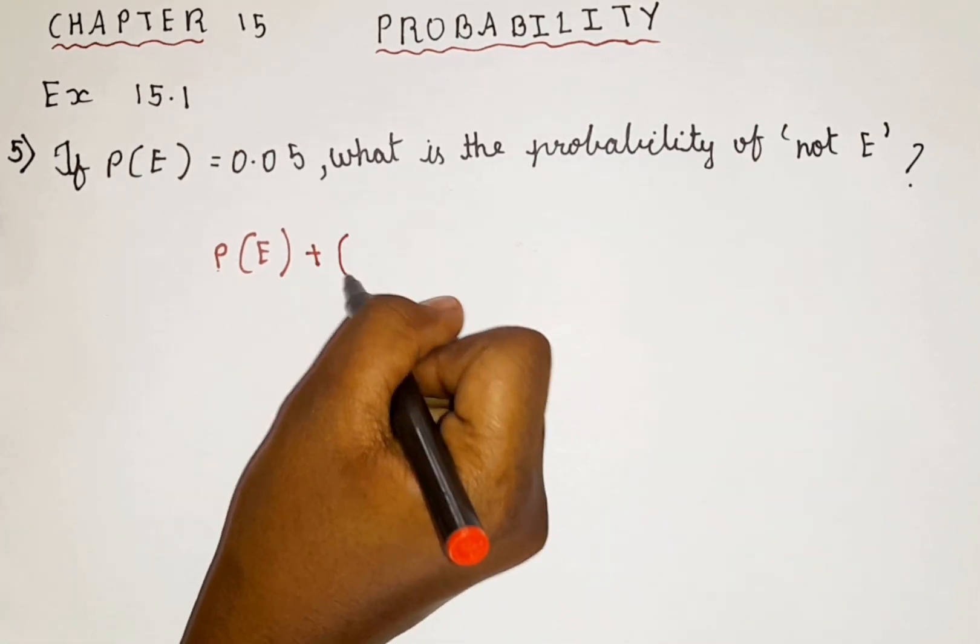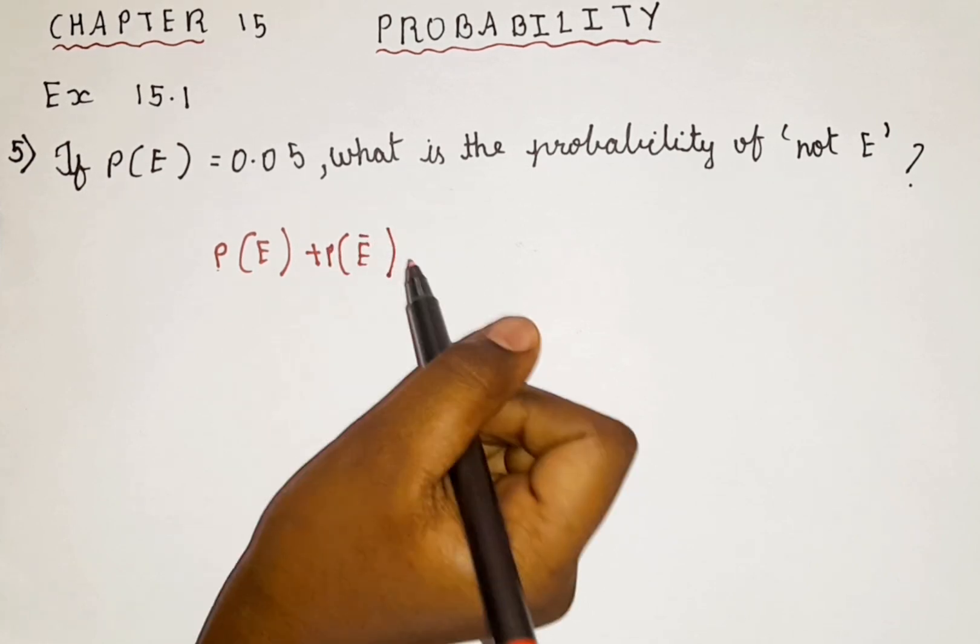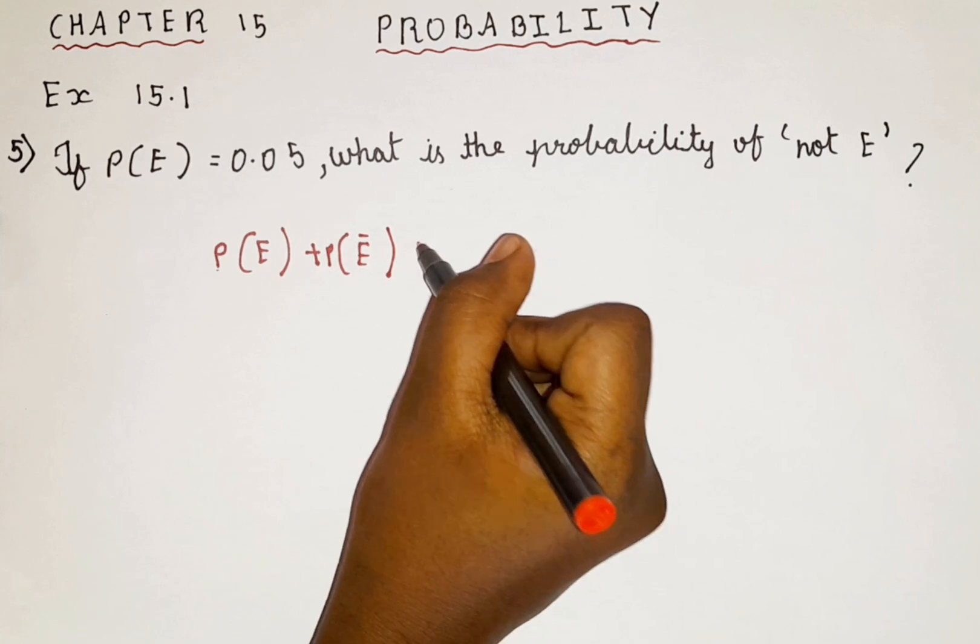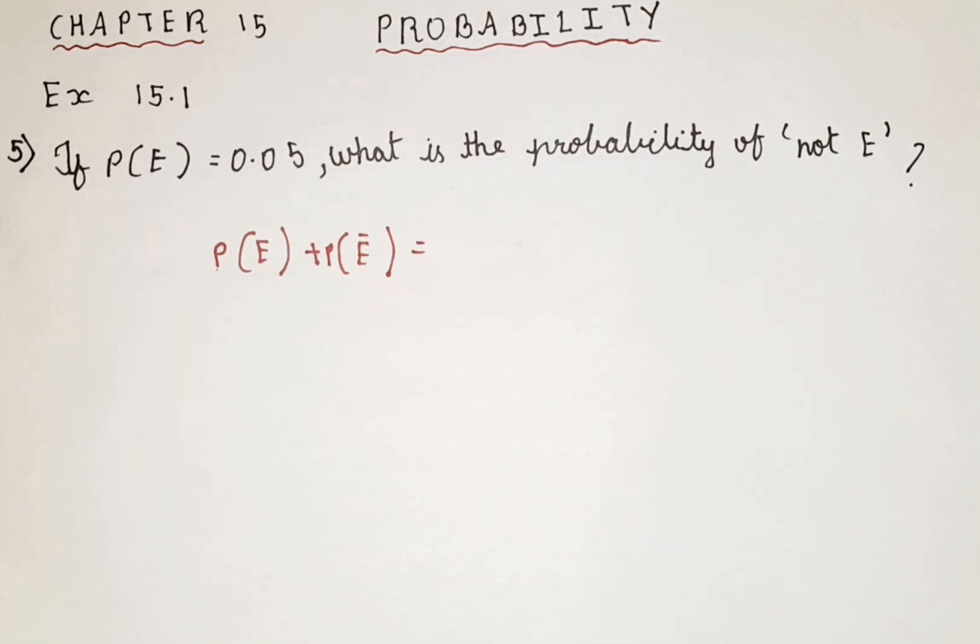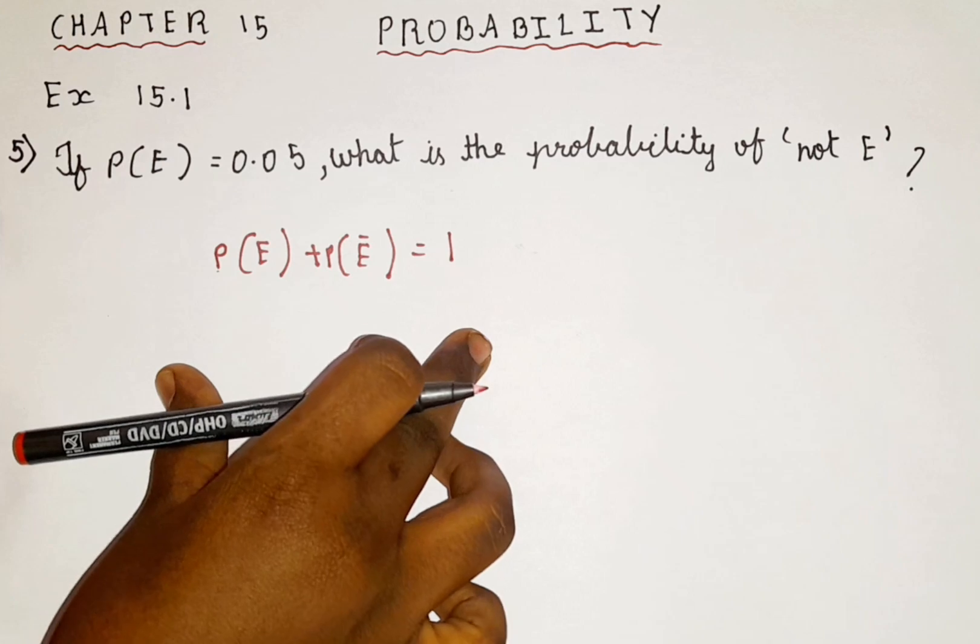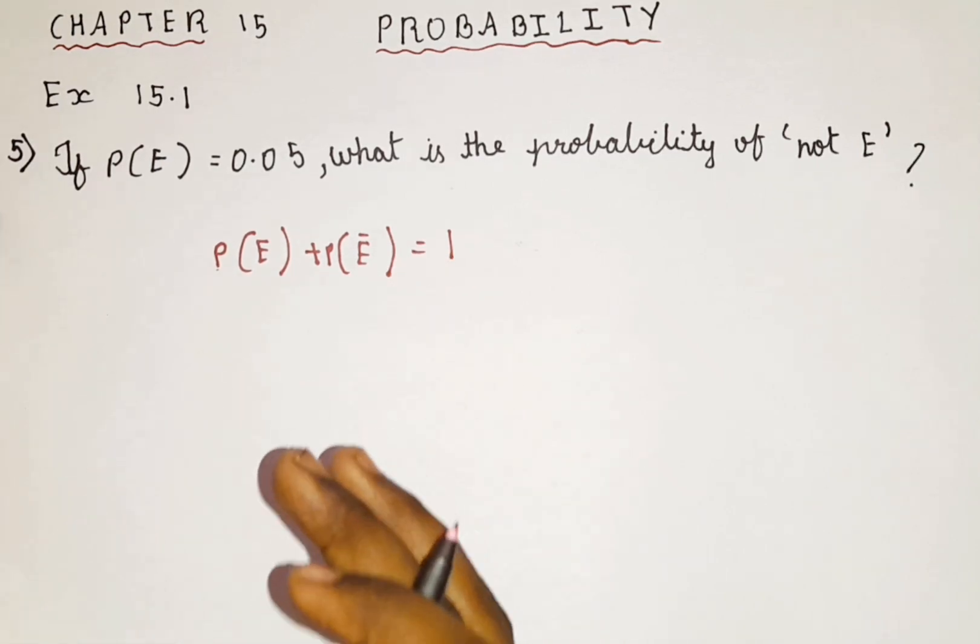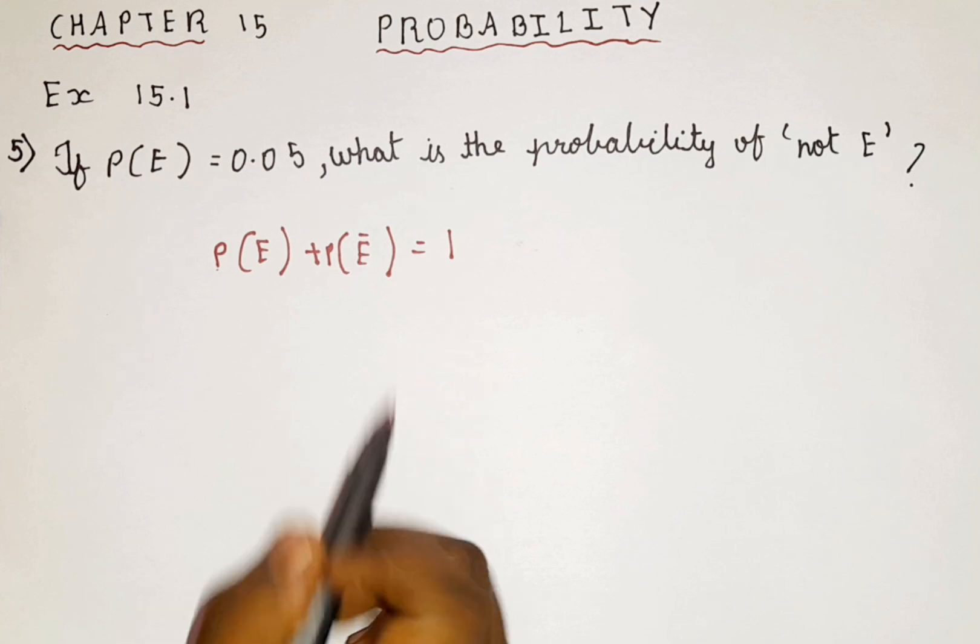So probability of an event plus probability of not an event is equal to 1. Remember this formula, probability of an event and probability of not happening is equal to 1.